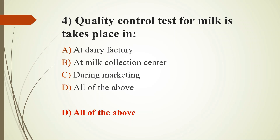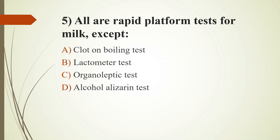Fifth question: All are rapid platform tests for milk except — Option A: Clot on Boiling test; Option B: Lactometer test; Option C: Organoleptic test; Option D: Alcohol Alizarin test. The answer is Option B: Lactometer test. The lactometer test is used to check the density of milk; the lactometer is the instrument used. The most common adulterant in milk is water. About 300 to 350 ml of milk is needed for lactometer testing.